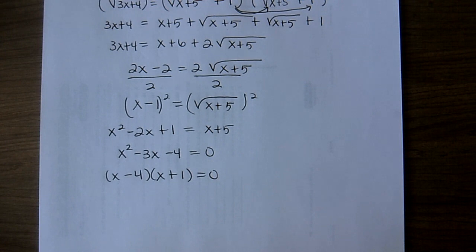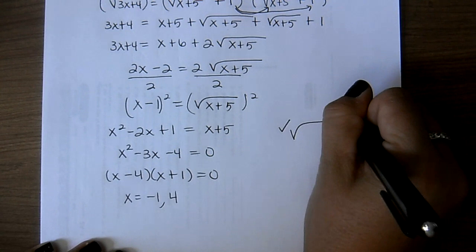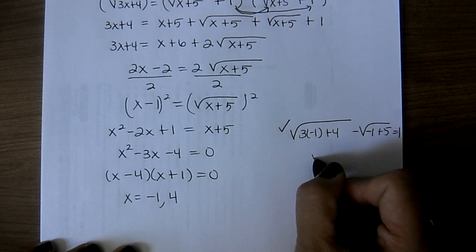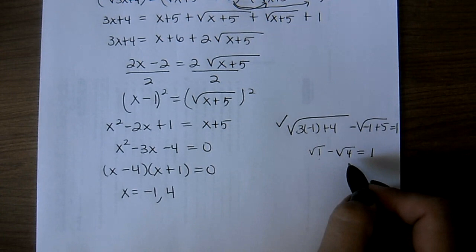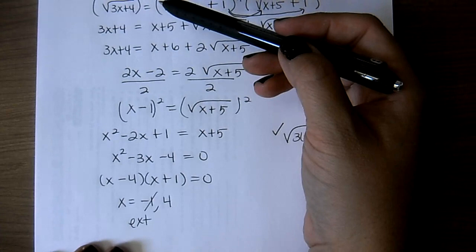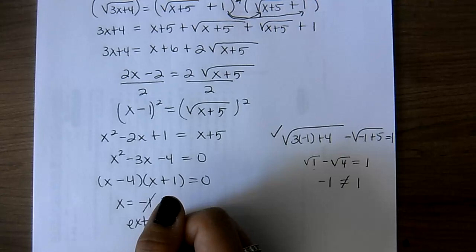I have to check both solutions. Checking x equals negative 1: plug into the original to get square root of 1 minus square root of 4, which is 1 minus 2 equals negative 1, and negative 1 does not equal 1 — so negative 1 is extraneous. Checking x equals 4: plugging in 4 is a good solution. So the only solution is x equals 4.